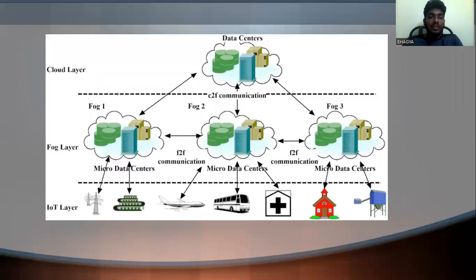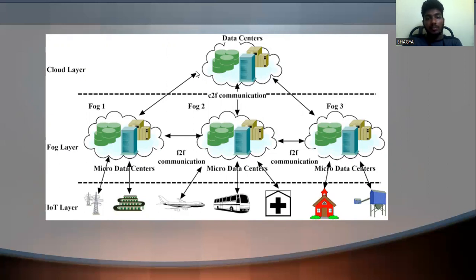Looking at the diagram, this shows the cloud layer, fog layer, and IoT layer. In the fog layer, there are processes fog one, fog two, and so on. The same data is stored in multiple locations. So whether you access via towers, aeroplanes, buses, or medical sources, all data sources are handled here.